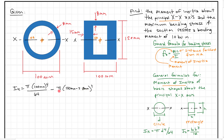When we work that out, we get a value of 2,464,818 millimeters to the fourth. So that's a large number, and I'll label this as the circle result.